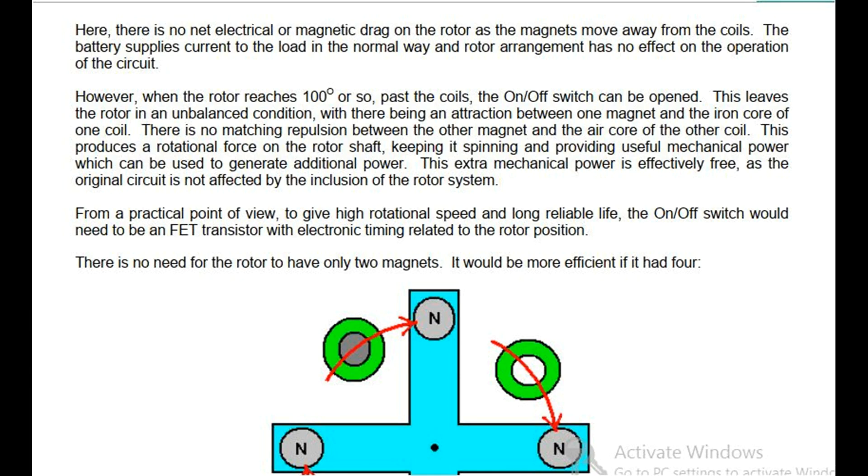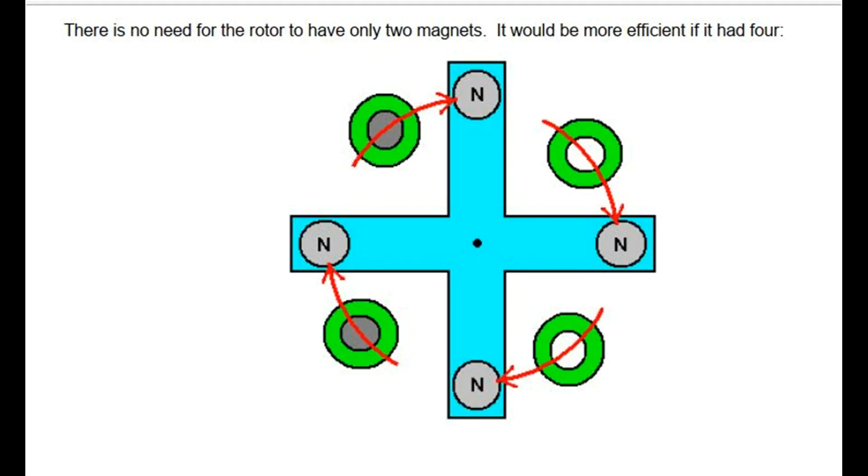From a practical point of view, to give high rotational speed and long reliable life, the on-off switch would need to be an FET transistor with electronic timing related to the rotor position. There is no need for the rotor to have only two magnets. It would be more efficient if it had four.